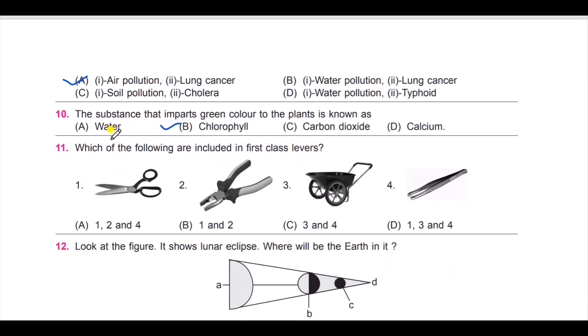Question number 11: which of the following are included in first class lever? Look at the pictures here: one, two, three, four. Now the options: option A, one, two, four; B, one and two; C, three and four; and D, one, three, and four. Which includes first class lever? It is B: one and two.